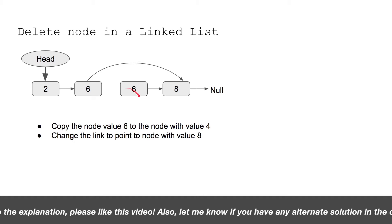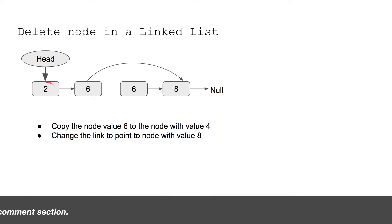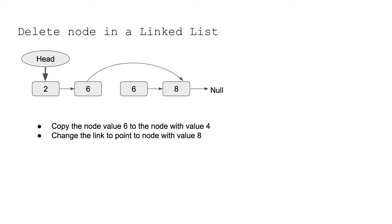Notice that we haven't actually deleted the original node — we simply changed its value and pointer. The original next node becomes redundant. Traversing the list gives 2 → 6 → 8, the expected output. You can get this intuition in an interview only when you have good hands-on practice with linked list problems. The more problems you solve, the easier it becomes to spot such tricks.